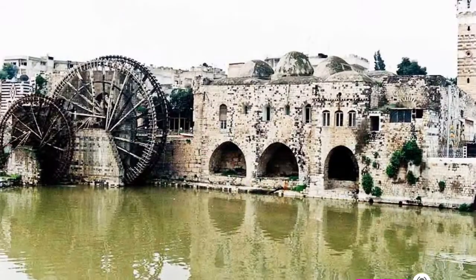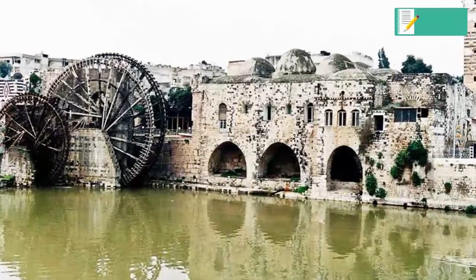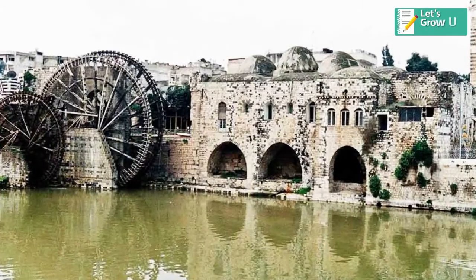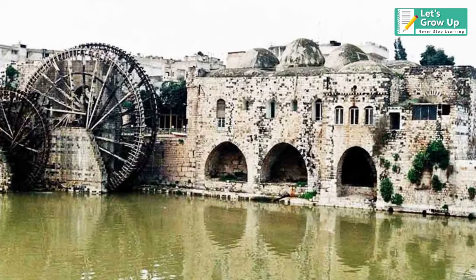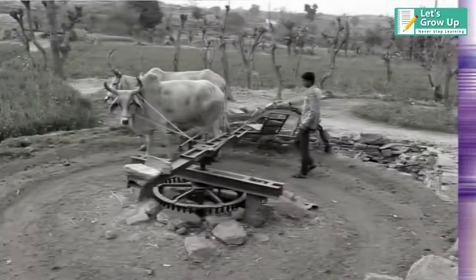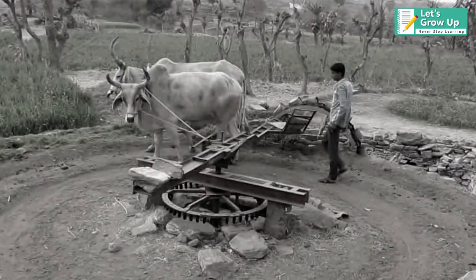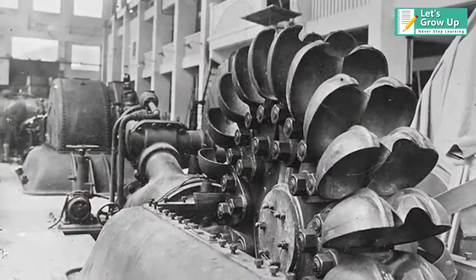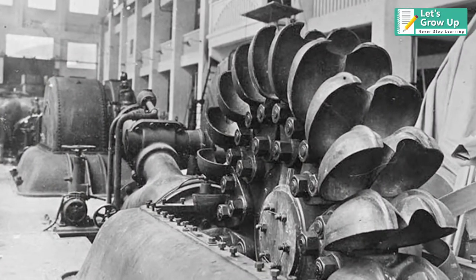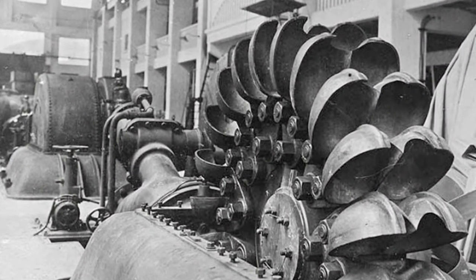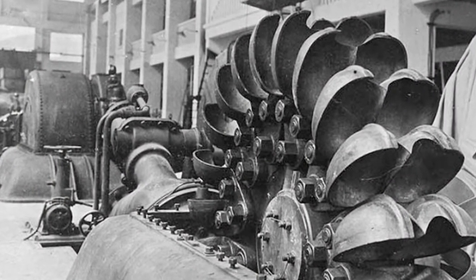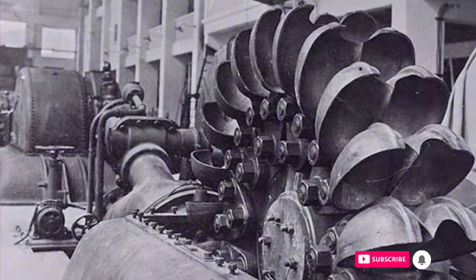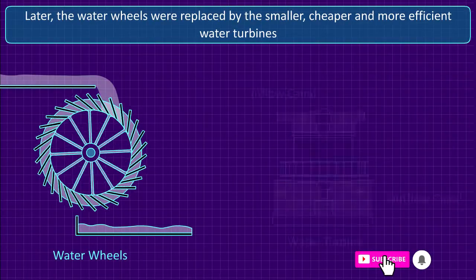It has a long history. Since the early ages, water wheels have helped humans do several tasks like irrigating crops and grinding grains. They also brought revolutionary improvements in paper mills, textile mills, and metallurgy plants.